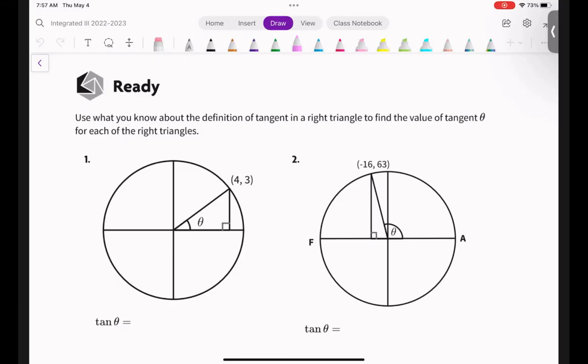So we are going over 7.3, number two in Ready, Set, Go. It says, use what you know about the definition of tangent in a right triangle to find the value of tangent theta for each of the right triangles.